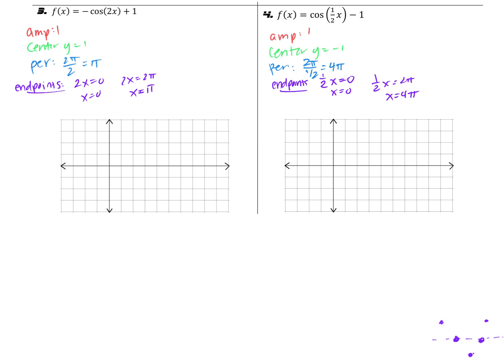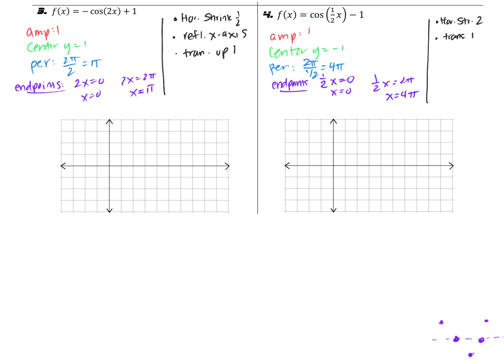Here's the key information for each of the two problems. For number 3, the 2 inside means a horizontal shrink with a scale factor of one half; the negative in front means a reflection across the x-axis; and the plus 1 means translating up 1. For number 4, the one half inside means a horizontal stretch by a scale factor of 2, and the minus 1 on the outside means translating 1 down.